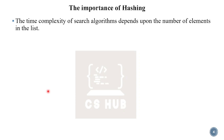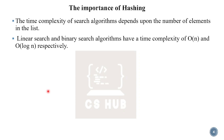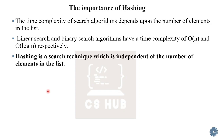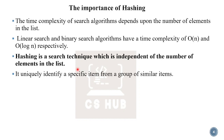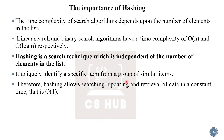But when we use hashing, it is independent of the number of elements in the list. Hashing is a search technique — it is independent of the number of elements and uniquely identifies a specific item from a group of similar items. The time complexity of hashing is called order of 1, meaning we can directly retrieve that element.